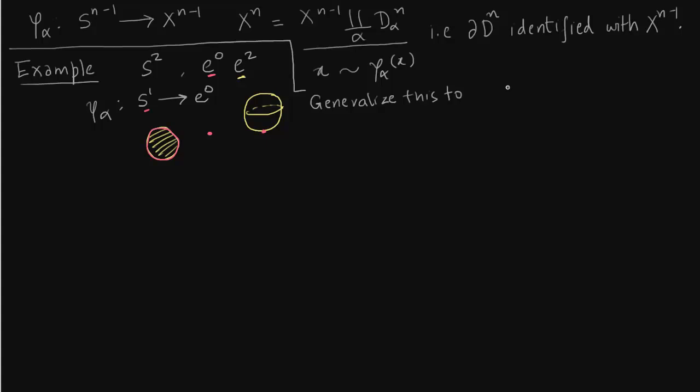And this attachment map, see notice also that attachment map is to a single point e^0. So it has to be a constant map. If you are mapping everything to a point that means it's a constant. I will make it clear that e^0 is nothing but x^(n-1) and S^n is what we want to construct which is x^n. So again this is the boundary of the disk and the boundary of the disk is identified with e^0.